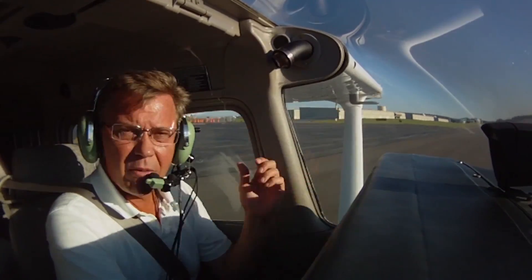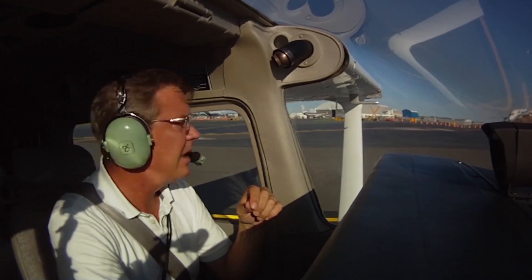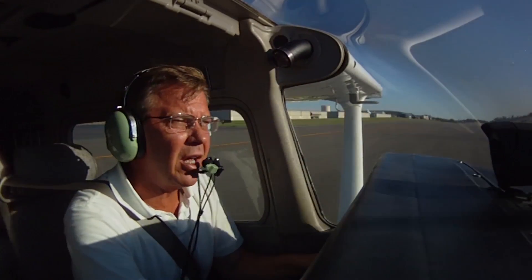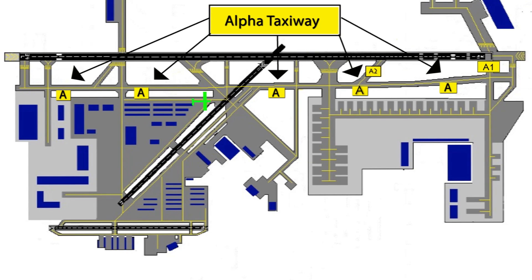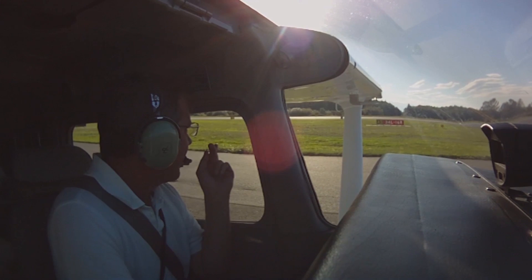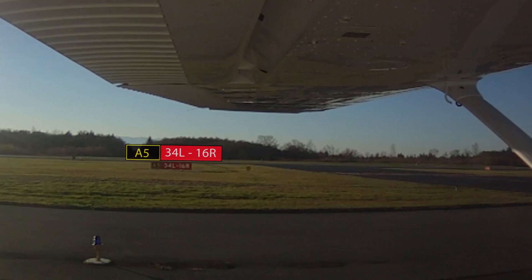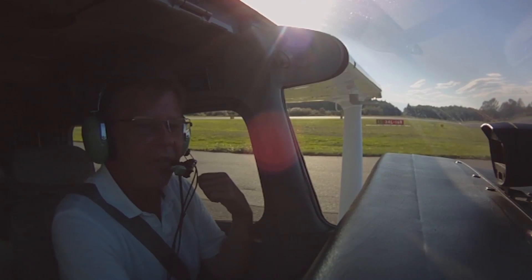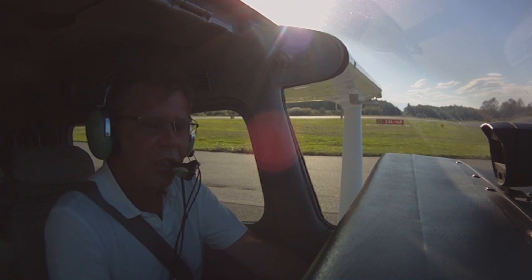We crossed runway one one as cleared, and now we're pulling up to Alpha five. It sounds cryptic, but it's simple: the taxiway is called Alpha, and it's numbered Alpha one through Alpha ten along its length. Alpha five is midfield. You can see the signs for runway three four left and one six right. Runway three four is to the north; runway one six is to the south — that's the one we're taking off on. Before we go, we run the pre-takeoff checklist.